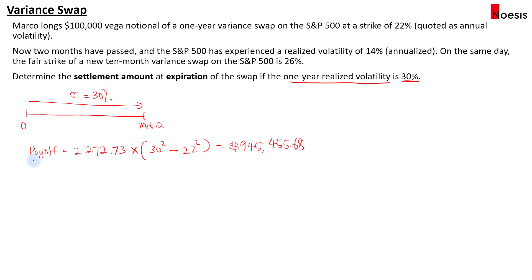And this is the payoff to the long in the swap. If it's a short position, then it will be negative 945,000.